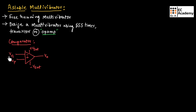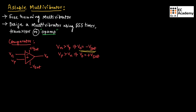Let us take VN as the voltage across the negative terminal of the op-amp, and VP as the voltage across the positive terminal. In this comparator circuit, if VN is greater than VP, the output voltage V0 will be equal to minus V saturation. If VP is greater than VN, the output voltage will be equal to plus V saturation.